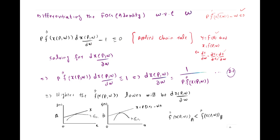Solving for dx/dw, we shift the minus one to the right hand side and divide both sides by p·f''(x). This gives us: the derivative of the factor demand function with respect to w equals 1 over p·f''(x).